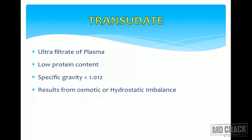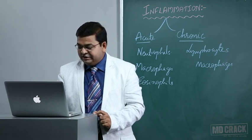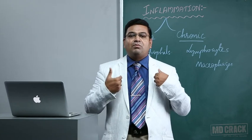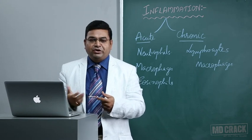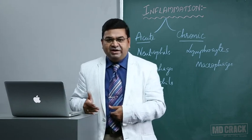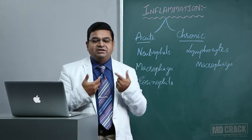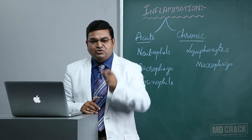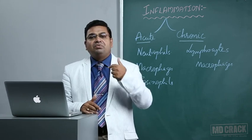Transudate is the ultrafiltrate of plasma containing very low amounts of protein, with a very low specific gravity. It results from either a disturbance in osmotic pressure or hydrostatic pressure — an imbalance between osmotic and hydrostatic pressure results in formation of a transudate. Edema is accumulation of excessive fluid in the interstitial spaces, which can also occur in serous cavities like the pericardial, pleural, and peritoneal cavities. Fluid in the peritoneal cavity is called ascites; in the thoracic cavity, hydrothorax or chylothorax; in the pericardial cavity, chylous or hemorrhagic pericarditis depending on exudate color.